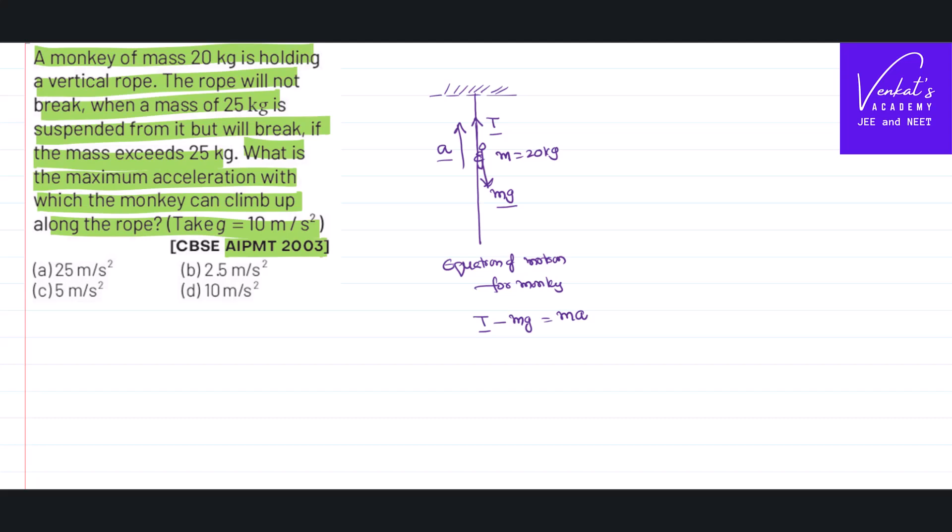What is this T? It is being said that maximum tension is 25. If I want this acceleration to be maximum, this tension also has to be maximum. What is that maximum tension the rope can bear? 25 kg weight. So tension is 25 kg, that means the respective force is 25G. Minus Mg, where M is the mass of the monkey, 20 into G, equal to 20 into acceleration maximum.